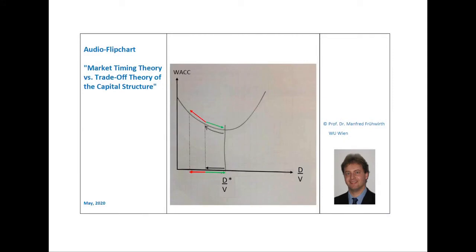Baker and Wurgler, 2002, show empirically that changes in the stock price have a significant impact on the capital structure and that it takes many years until this effect vanishes. After all, the capital structure of a company at a given point in time is the result of the managers' capital transactions throughout the years before. Companies with a low debt ratio are those that had to finance externally at times with a high stock price — they selected equity as a financing instrument and the resulting high equity ratio is kept for many years. By contrast, firms with a high debt ratio are those that had to finance at times with a low stock price — they selected debt as a financing instrument and the resulting high debt ratio is maintained for many years.